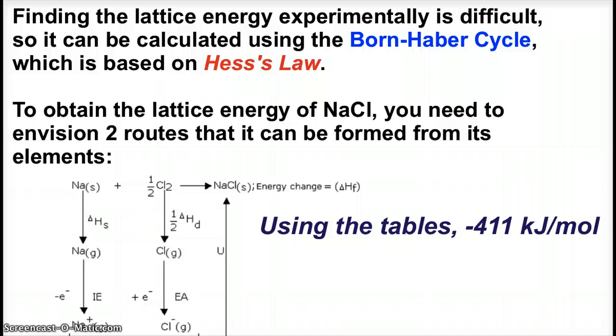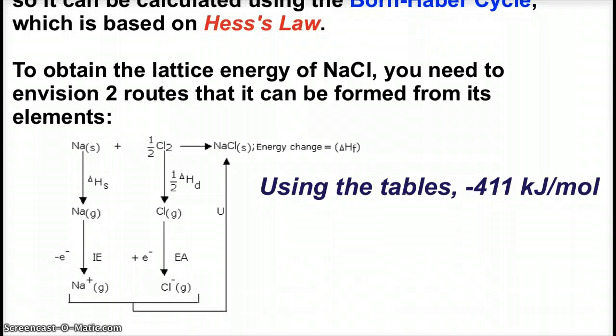Finding the lattice energy experimentally can be quite difficult. So, the process is usually done by what's called the Born-Haber cycle. And it's similar to when we talked about Hess's Law. So, in order to obtain the lattice energy for sodium chloride, we look at it through a couple different routes. Okay, first off, solid sodium plus chlorine makes sodium chloride. And we can find the delta H of that by using our delta H of formations. And when we do that, it's negative 411 kilojoules per mole.